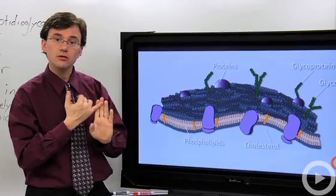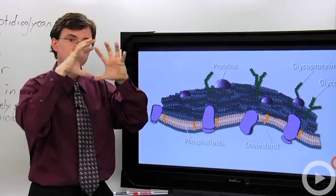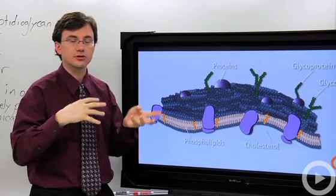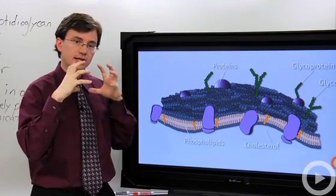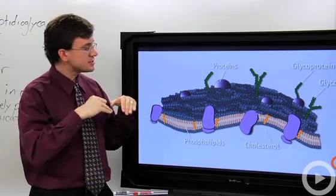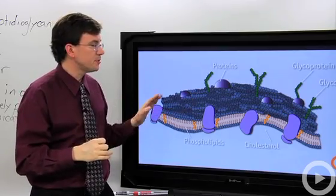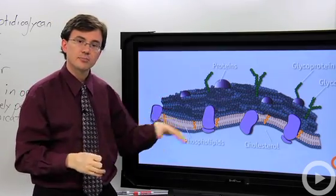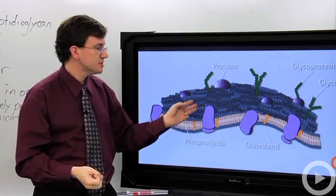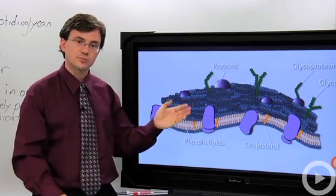So there you go — the cell wall is on the outside of the cell and is made of rigid structures like cellulose or chitin, giving protection and structure to the cell. Inside the cell wall, you'll find the phospholipid bilayer of the plasma membrane, made out of phospholipids plus a bunch of other chemicals such as proteins.